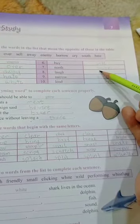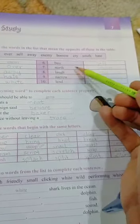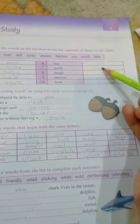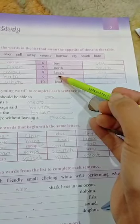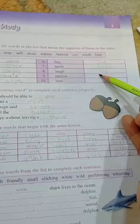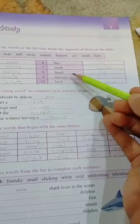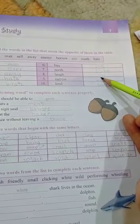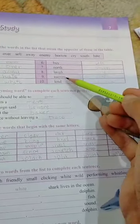North, south, these are the directions. These are the opposite directions. Laugh, when you smile or when you laugh. Cry, the opposite of laugh is cry.